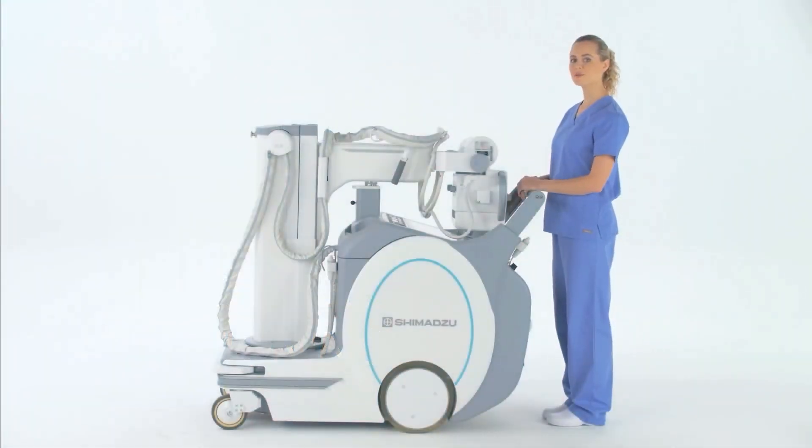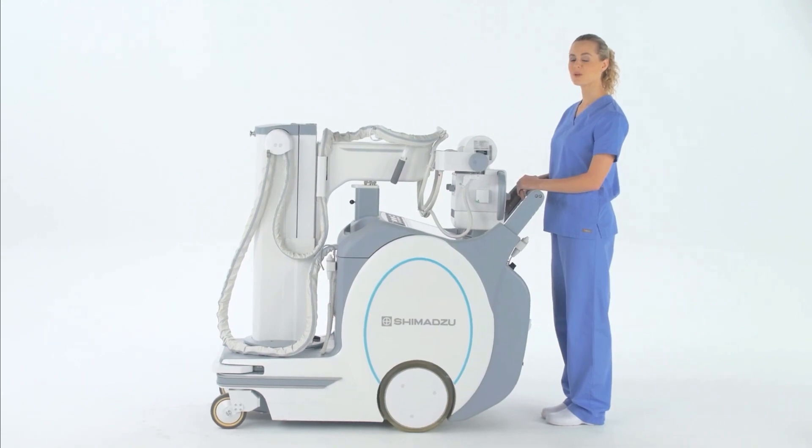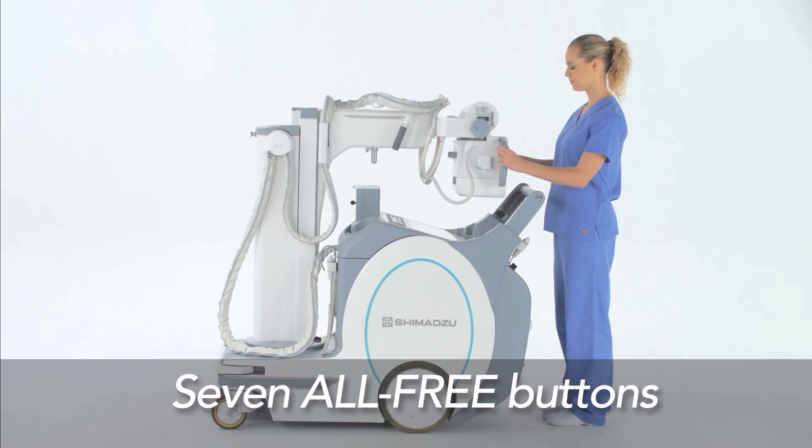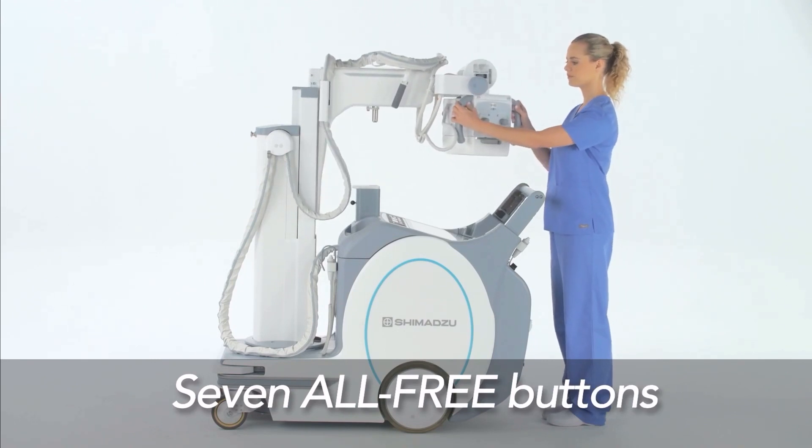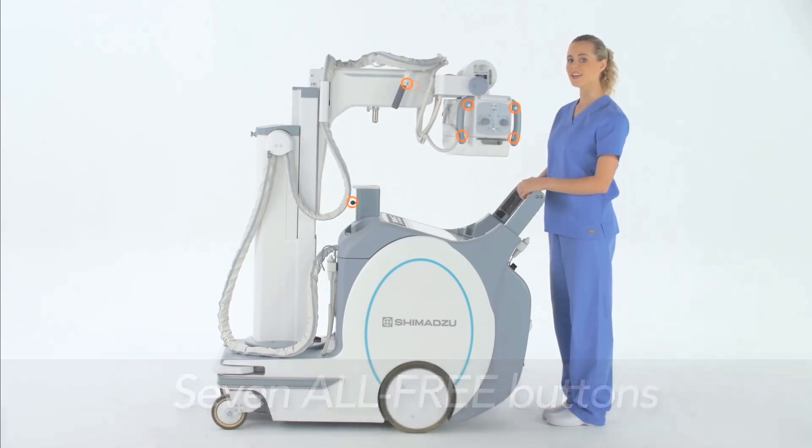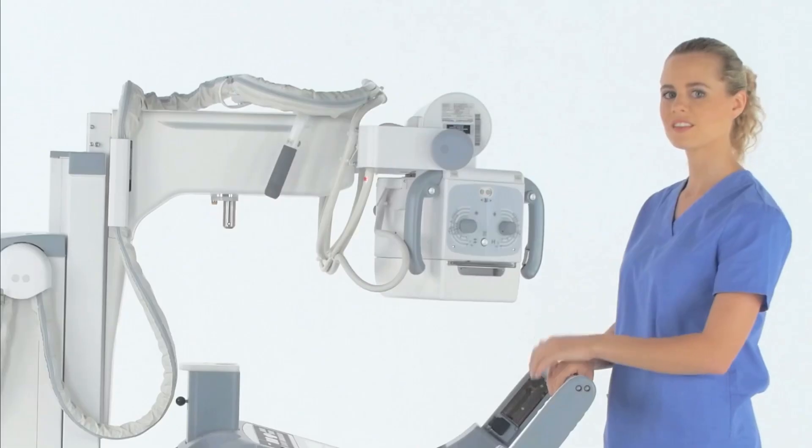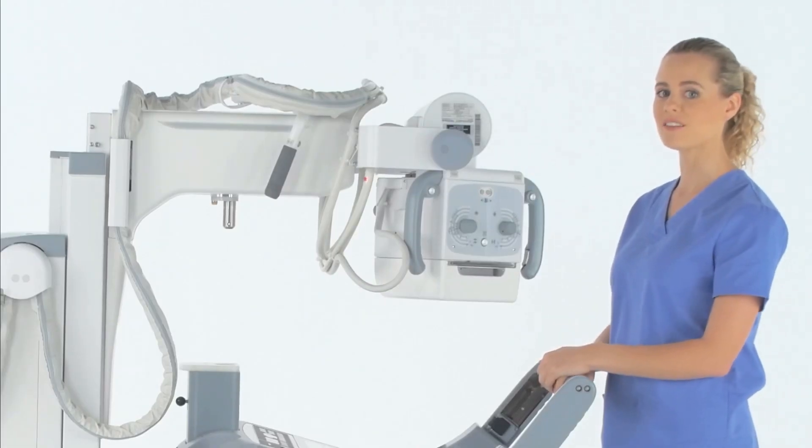When you're ready to use and position the X-ray tube unit, press any one of the seven all-free buttons. They are located at the top and the grip of the handles to either side of the collimator, and on the handlebars on either side of the arms.